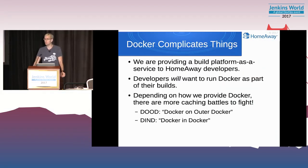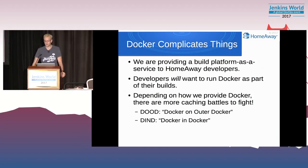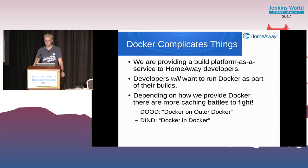Why is there a symlink and not just a direct bind mount? Because Docker complicates things. We are providing a build platform as a service to the entire dev org to run whatever jobs they need, and they will want to run Docker as part of their builds. Depending on how we make Docker available, there are more caching battles to fight. There are two ways of providing Docker: DooD — Docker on outer Docker — and DinD — Docker in Docker. I'm going to talk about the caching battles we have to fight with each one.